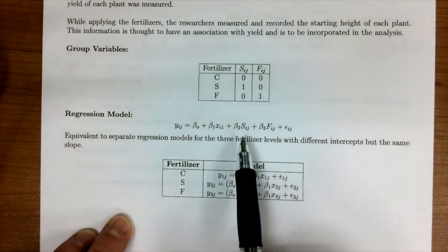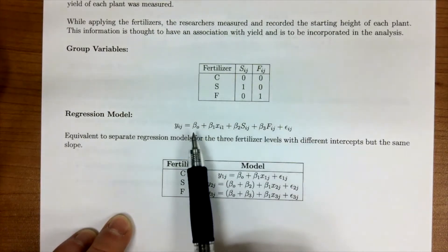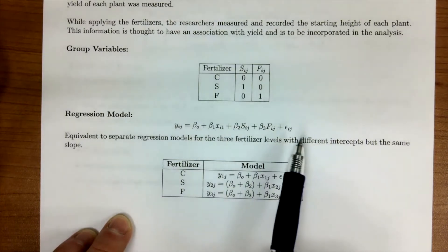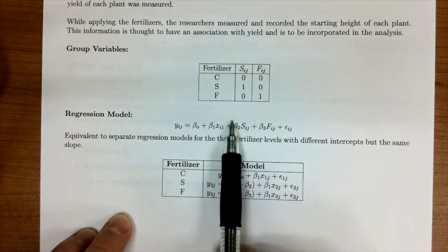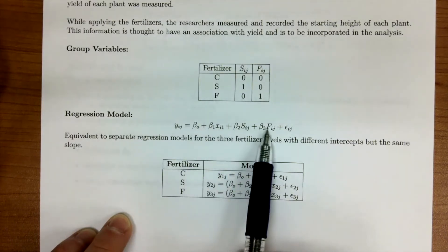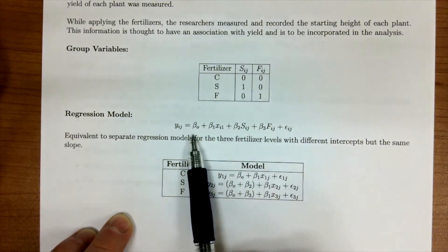if S and F both equal zero, these get canceled out and we're left with a beta naught, beta 1, and then our epsilon. If S is 1, then this beta 2 term is going to join our beta 0 and our beta 3 is going to cancel out because we'd assume that's zero. And then vice versa. If F is 1, this beta 3 is going to join our intercept.